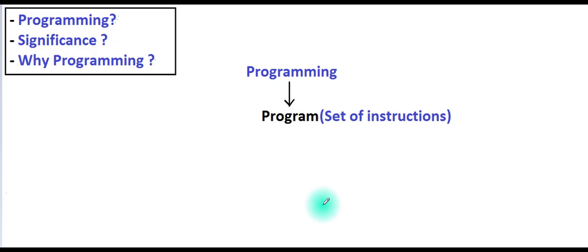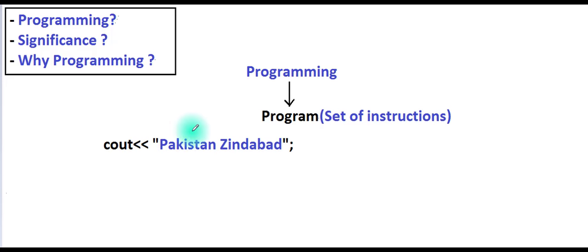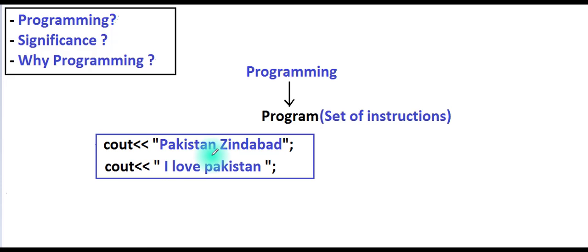Program کو ہم کیا کہتے ہیں؟ Set of instructions۔ For example یہ ایک instruction ہے: cout پاکستان زندہ بات۔ cout کی statement جو instruction ہوتی ہے وہ screen پر کچھ بھی display کرتی ہے۔ تو پاکستان زندہ بات screen پر لکھا جائے گا۔ اسی طرح ہم ایک instruction اور add کرتے ہیں: cout I love Pakistan۔ اب دو instructions ہوگئیں — ایک پاکستان زندہ بات display کرے گی، ایک I love Pakistan display کرے گی۔ دو instructions کا ایک set ہو گیا۔